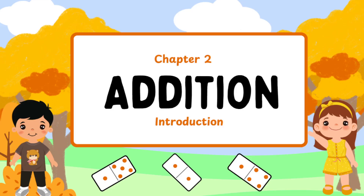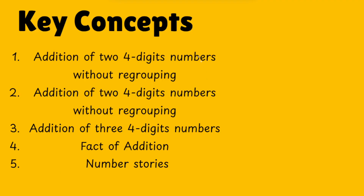What do you guys know about addition? We know that counting all the numbers together. Right. When you have two apples and I have one apple, how much is the total? Three apples. Right. So this is how you do addition. We will see some advanced level of addition — that means we are going to see ones, tens, hundreds, and thousands places. So let's move on to the topics we are going to see in this chapter.